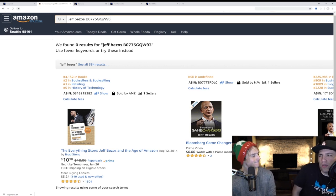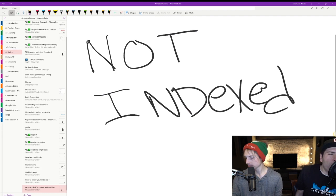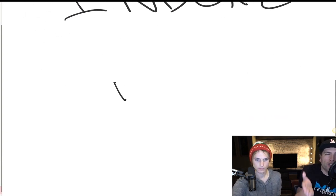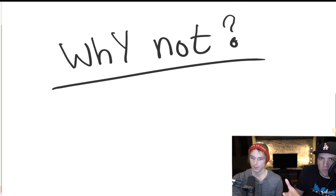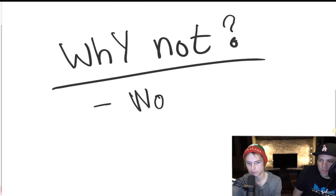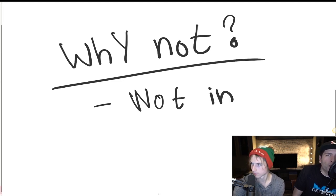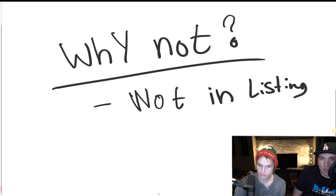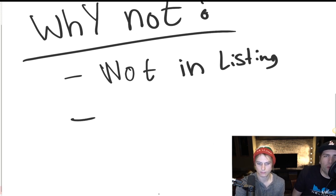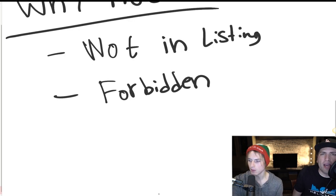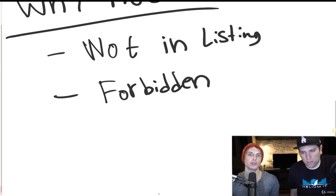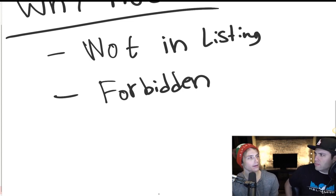Number two: why aren't you indexed? There are a variety of reasons. The most common is the keyword is simply not in the listing. Another reason is it could be a forbidden word — like drug-related words or words Amazon doesn't like, such as 'free' or 'lifetime warranty.' If you watch the do's and don'ts of keywords video, there's a list of about 10 categories of things you should not do.